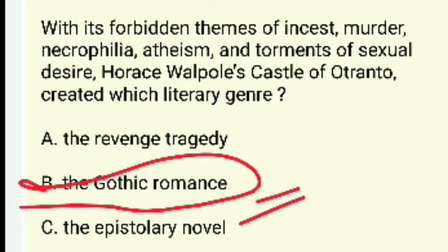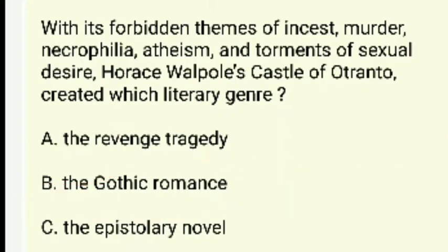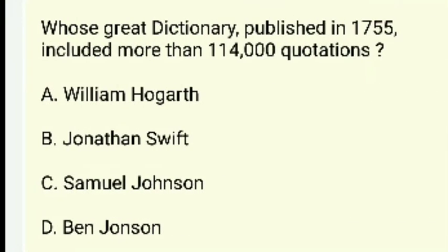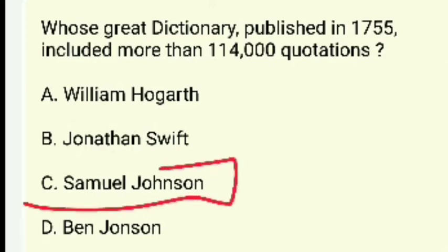An epistolary novel is related to letters. Whose great dictionary, published in 1755 and including more than 114,000 quotations, was it? William Hogarth, Jonathan Swift, Samuel Johnson, or Ben Johnson? The right answer is Samuel Johnson.